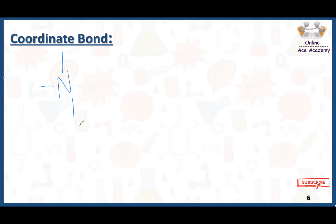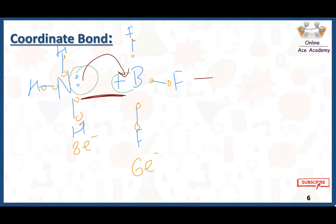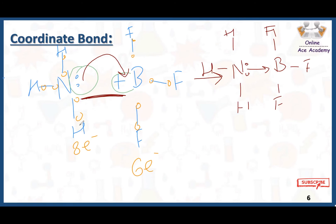NH3 has its lone pair of two electrons, while BF3 has an empty orbital on boron. Counting the electrons: nitrogen has eight electrons in its valence shell — complete octet. Boron has six electrons, so it is deficient. NH3 shares its lone pair with the empty orbital of boron, and ultimately a bond is formed — that bond is called a coordinate bond.